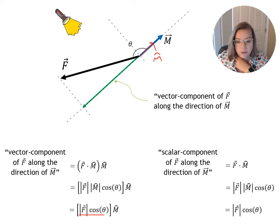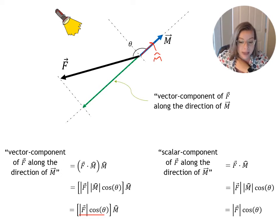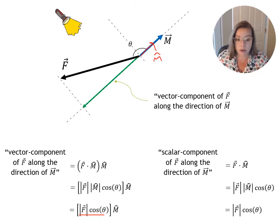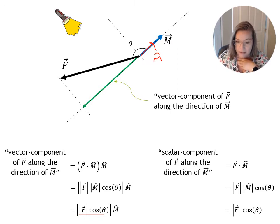If asked for the scalar component of F along the direction of M, you just want that number — the result of the dot product between vector F and M-hat — without the unit vector attached.